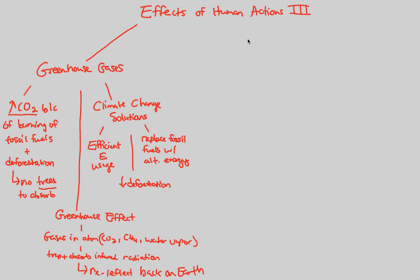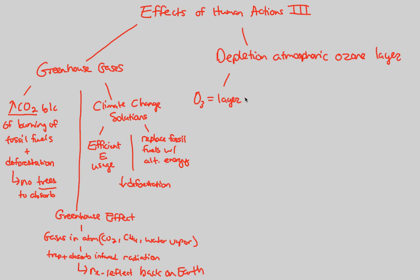The last thing to understand about the effects of human actions is the depletion of our atmospheric ozone layer. In our atmosphere, we have this layer of ozone, called O3 chemically speaking. This is a layer in the Earth's stratosphere, between 17 and 25 kilometers from the surface of the Earth.